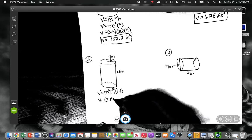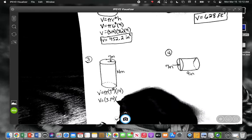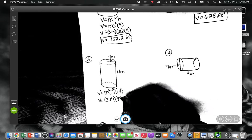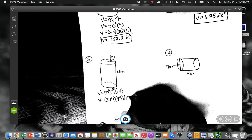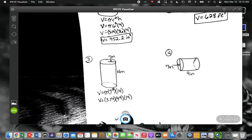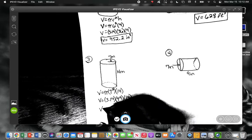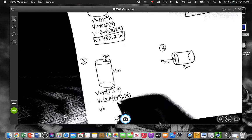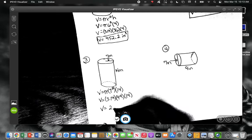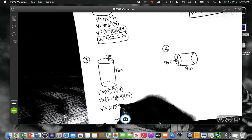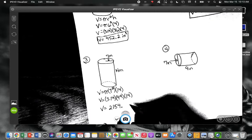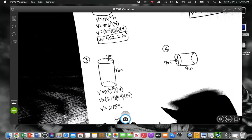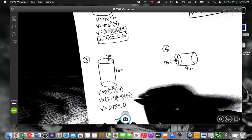Alright, so let's punch 3.14 times what's 7 squared? 49. 49 times 14 in our calculators. Okay, what did everybody else get? 2154.04. But then we have to round, right? So what are we going to round to? It's 0.4. To 0.0, right?